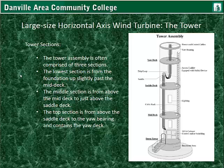The tower assembly is often comprised of three sections. The lowest section runs from the foundation up slightly past the middle deck. The middle section goes from above the mid-deck up through the top above the saddle deck. The top section runs from above the saddle deck up to the yaw bearing, containing the yaw deck. Some designs have ladders in a straight line; others have offset designs where you climb to one section, walk over, then climb another — limiting the distance of a potential fall.